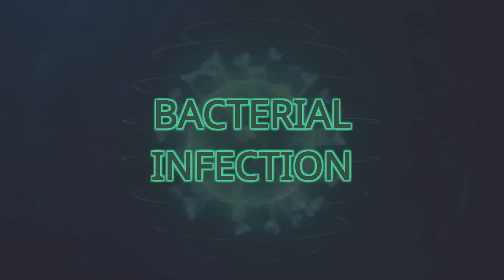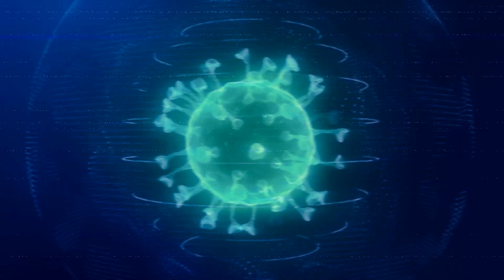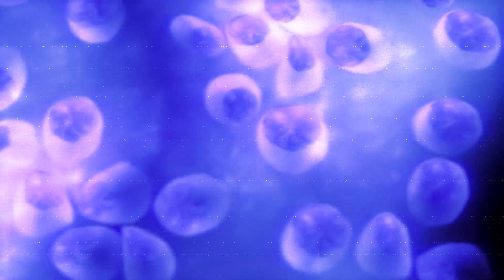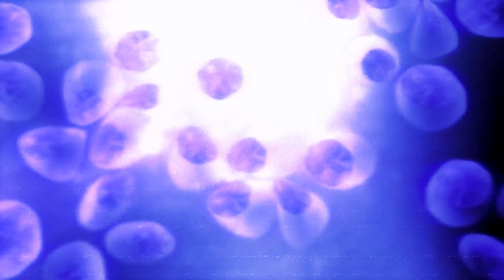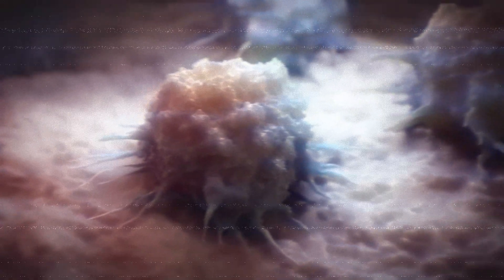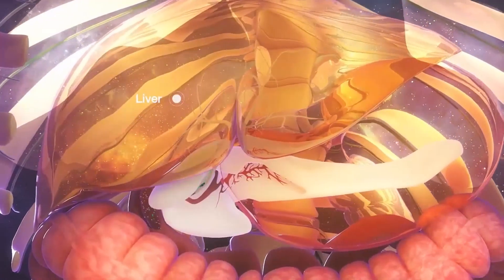Bacteria are living things that only have one cell. Under a microscope, they look like spheres, rods, or spirals. They are so small that a line of 1,000 could fit across a pencil eraser. Most bacteria won't hurt you. Less than 1% of different types make people sick. Many are helpful. Some bacteria help digestion, destroy disease-causing cells, and give the body needed vitamins. Bacteria are also used in making healthy foods like yogurt and cheese.